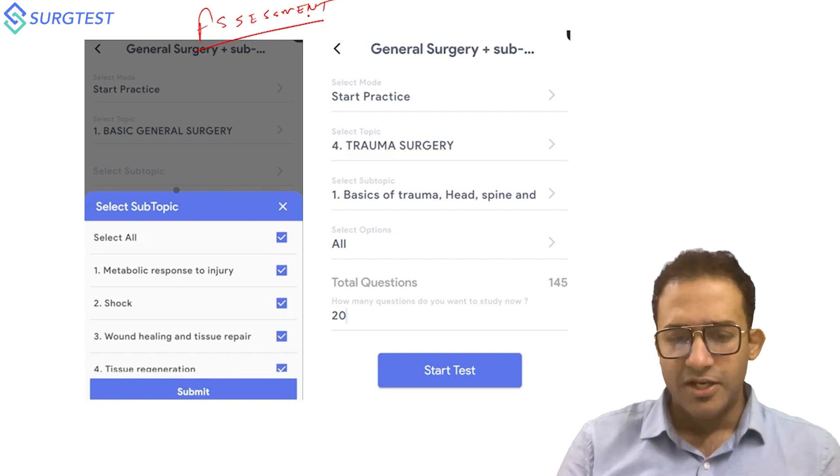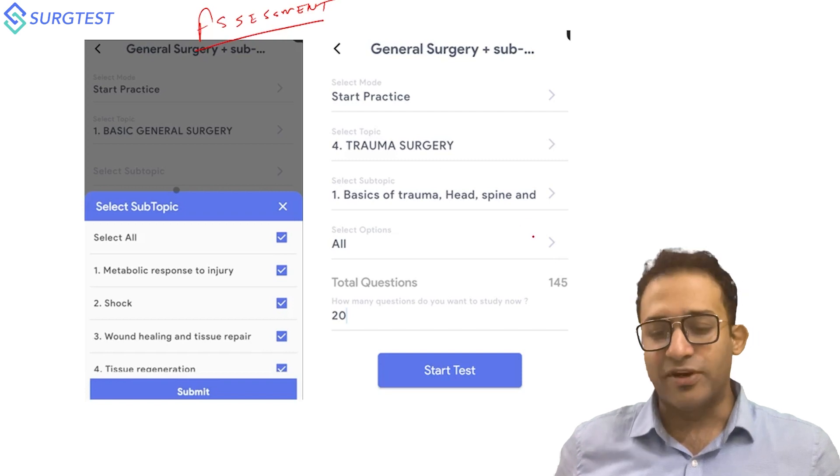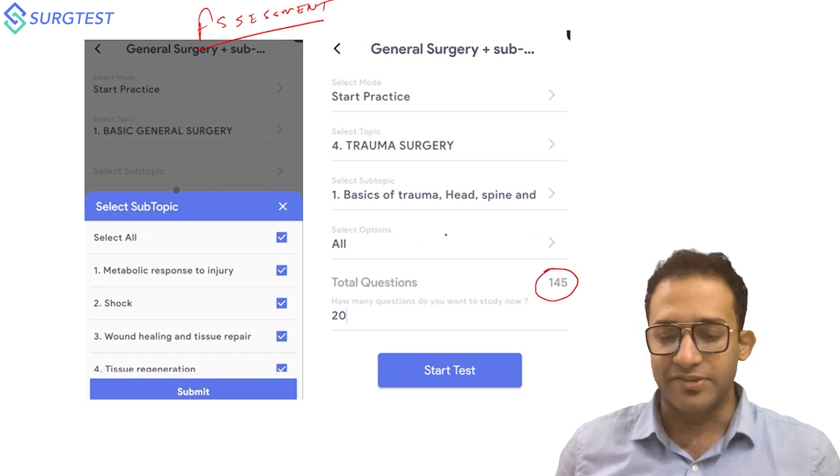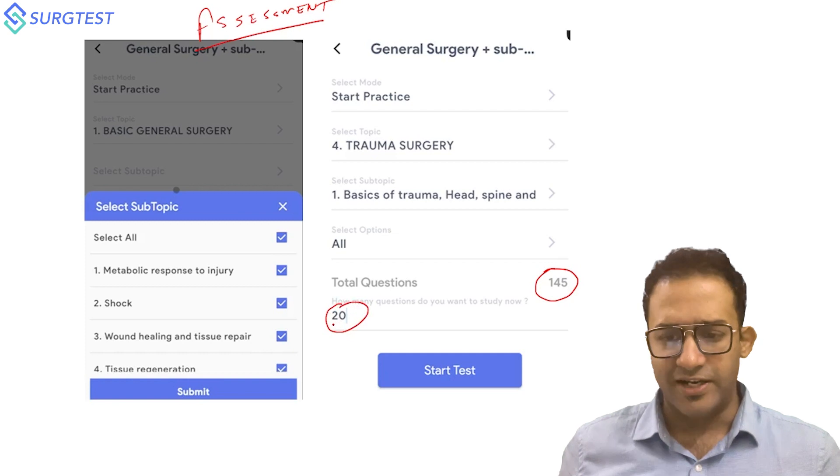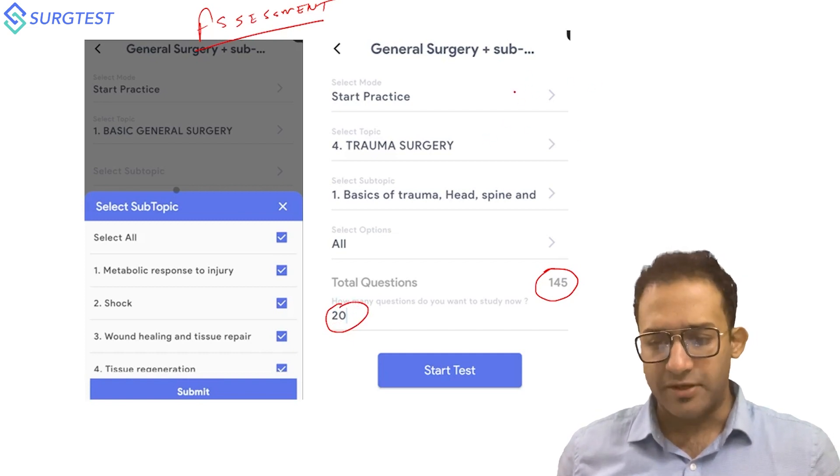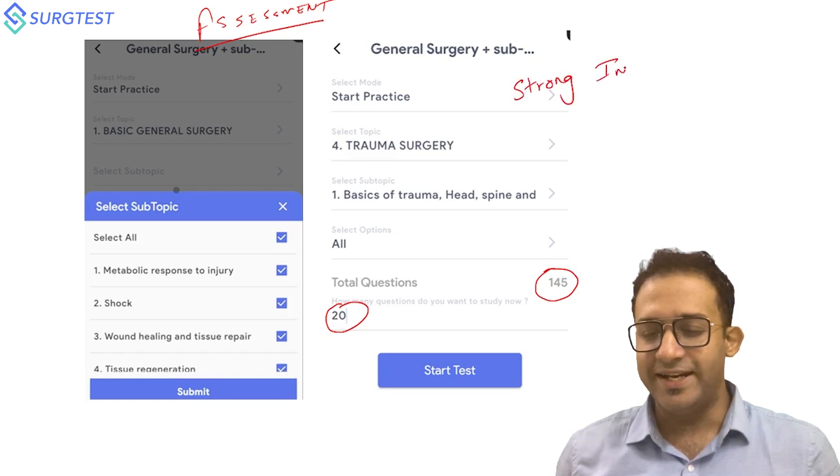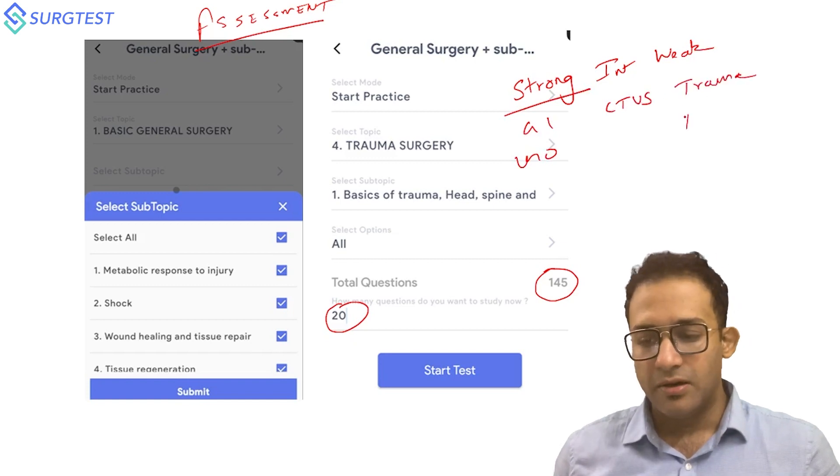Try to select all the topics. Out of that, say you're choosing trauma surgery and it shows total questions is 145. You've selected all the subtopics - select 20 questions. These questions are generated in random and this will give you an idea about which topic you are strong and which topic you are weak. So make a list: strong topics, intermediate, and weak.